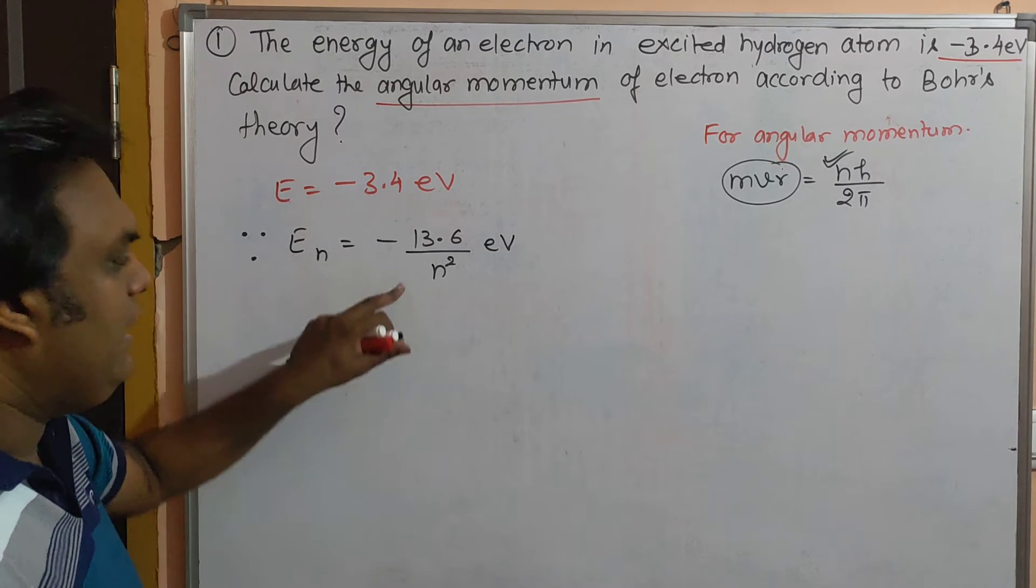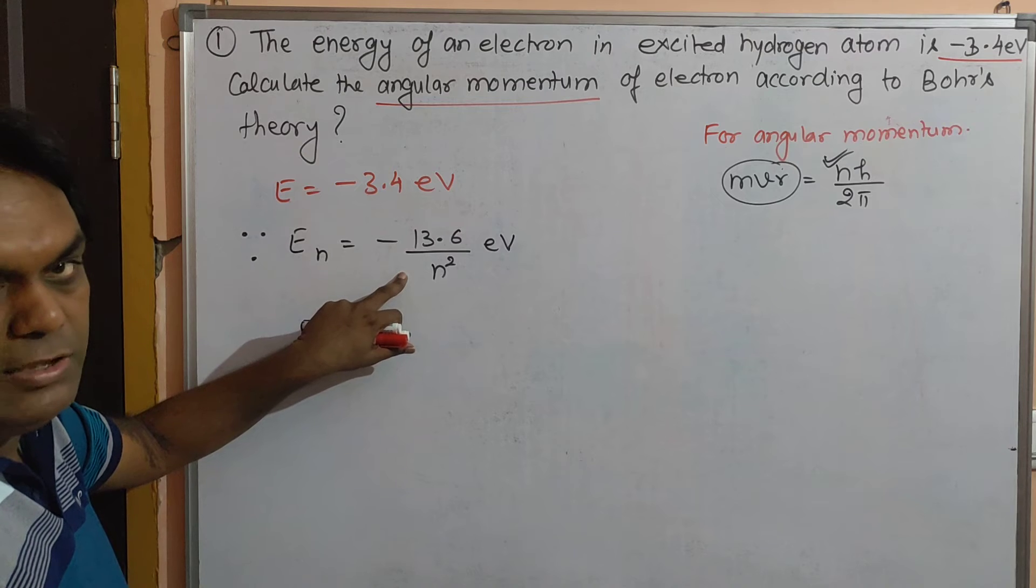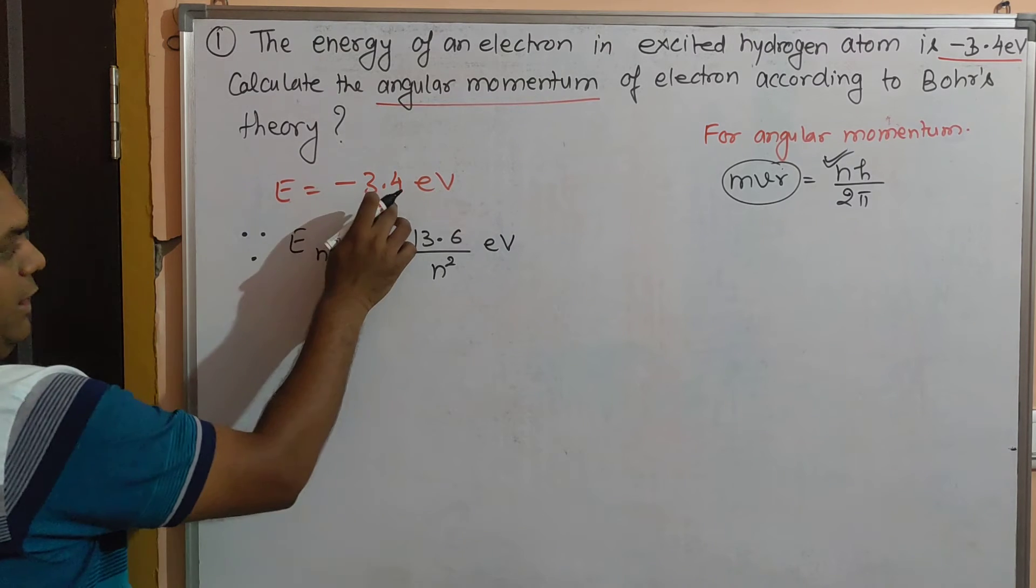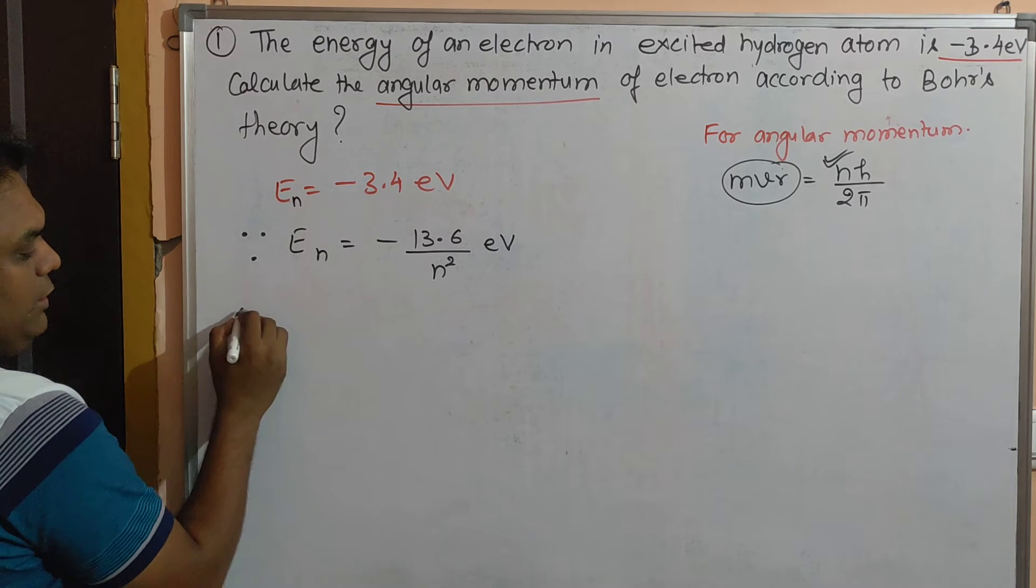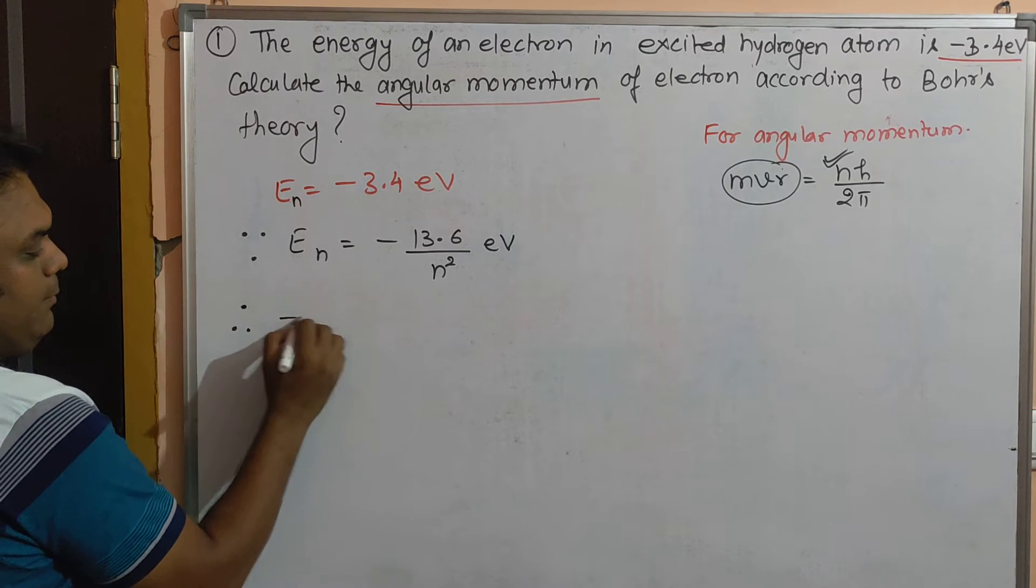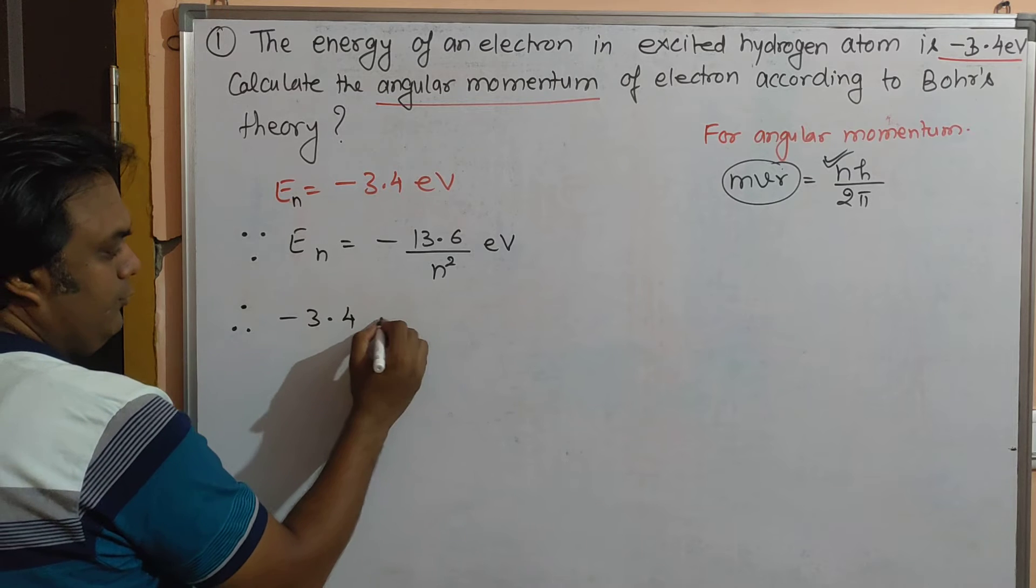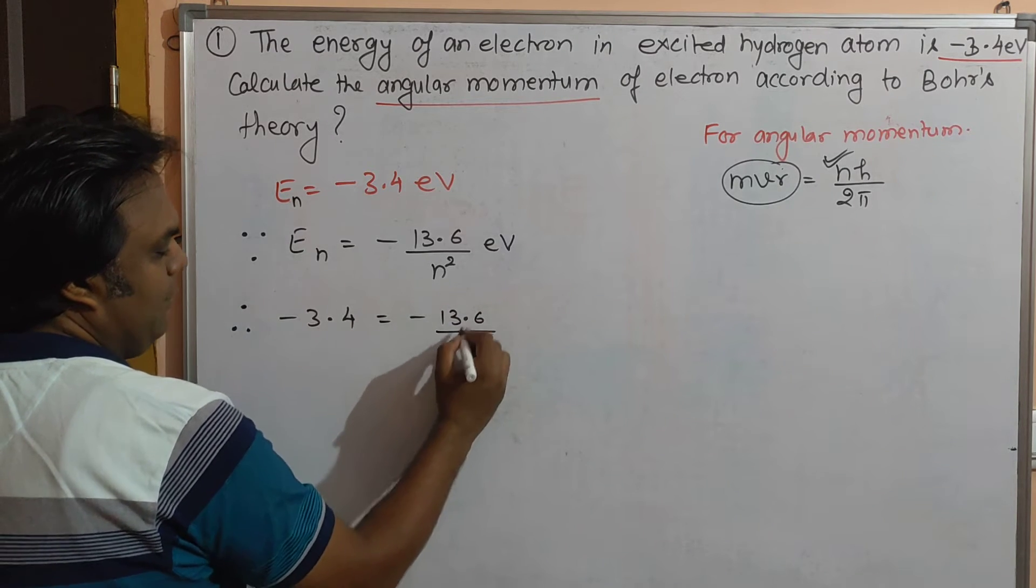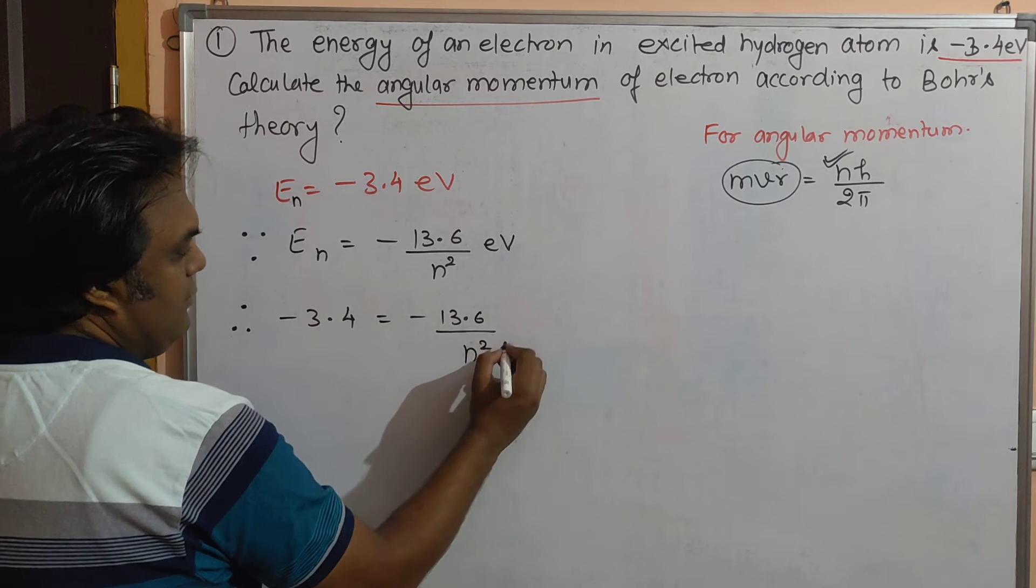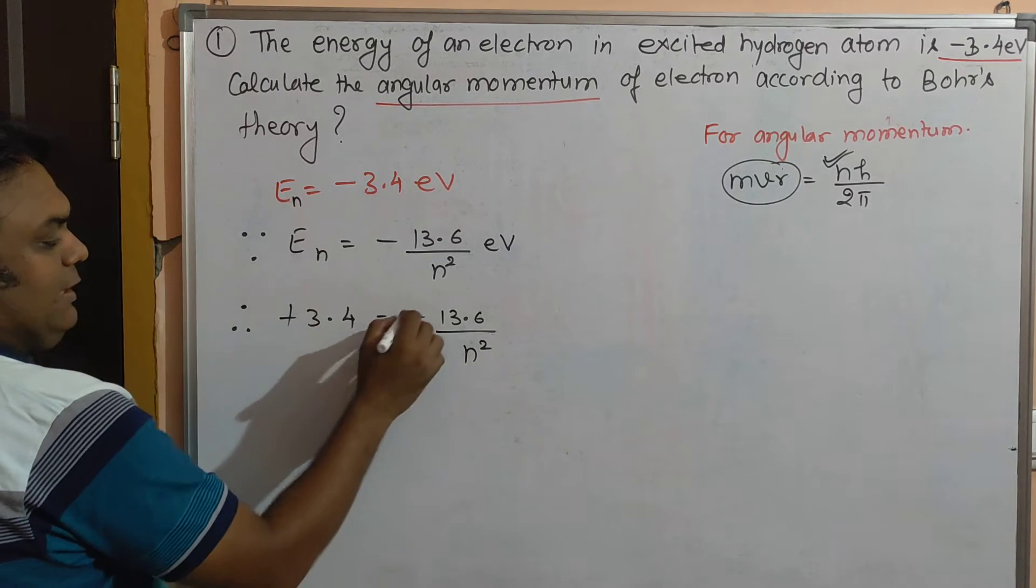The value of En is given as -3.4 electron volts. Therefore, -3.4 equals -13.6 upon n². The minus signs cancel out.